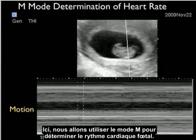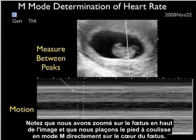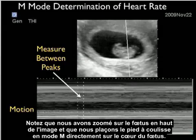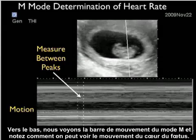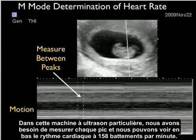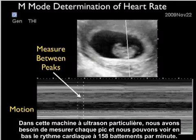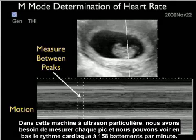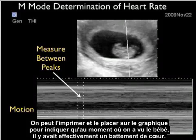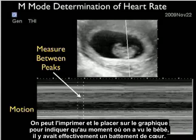Here we're going to use M mode to determine the fetal heart rate. Notice we have the fetus zoomed up towards the top of the image, and we're placing the M mode caliper directly over the fetal heart. Towards the bottom, we see the M mode motion strip, and notice the little waves showing the motion of the fetal heart. In this particular ultrasound machine, we need to measure between each peak, and we can see here that we get a heart rate determination towards the bottom — 158 beats per minute. This is something we can print out and place on the chart to show that at the time we saw the baby, there was an actual heartbeat.